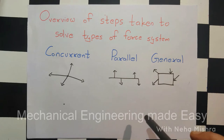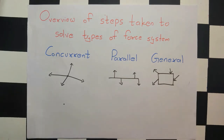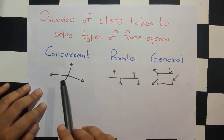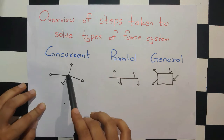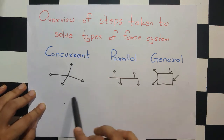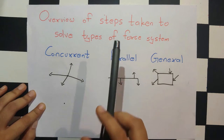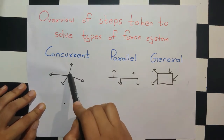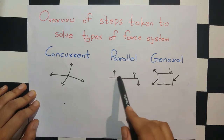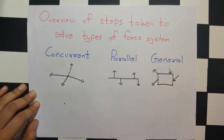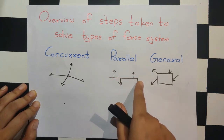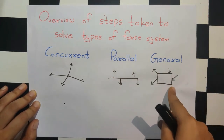In all the problems of coplanar type of force systems, we are asked to find one resultant force that will give the same effect as all the forces acting on that system. For example, in a concurrent type of problem, only one force gives the same effect as all forces give to that point. Similarly for parallel and general types of force systems.